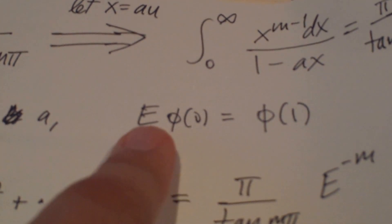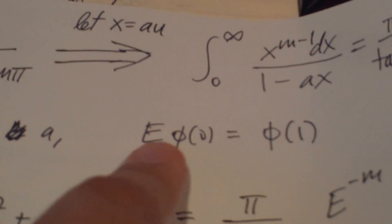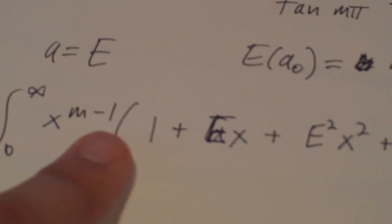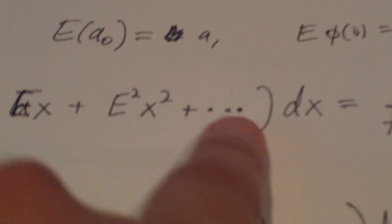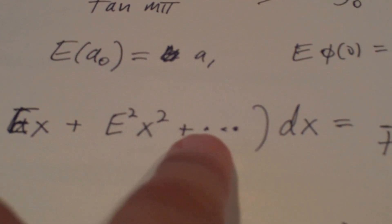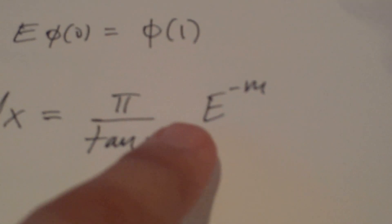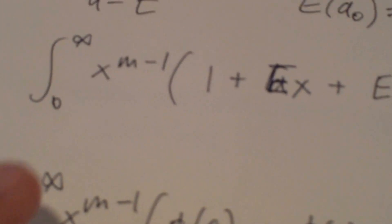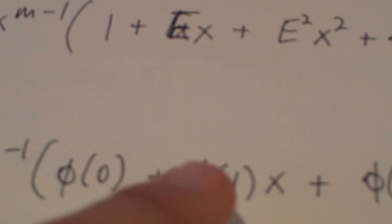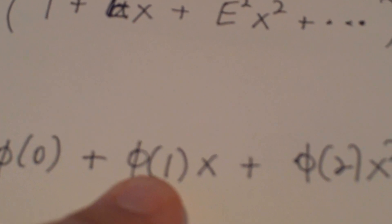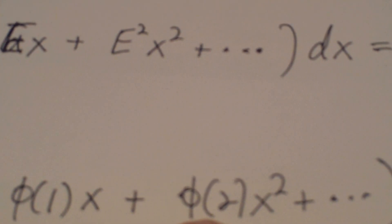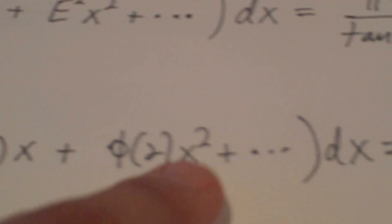We're going to use it on our phi. So phi is phi of zero, and using e to the first power moves it forward by one. So let's let a equal e and use our infinite series version of one minus ax, and rewrite this as the integral from zero to infinity of x to the n minus one, times one plus e times x plus e squared times x squared plus e cubed times x cubed, forever and ever. That equals pi over tangent(m pi), with a to the minus m becoming e to the minus m. Now multiply both sides by phi sub zero, so the phi sub zeros go into each one of these e's: e to the first moves phi sub zero up by one to phi of one, e squared moves it to phi of two, and so on — giving us an infinite series with all plus signs.